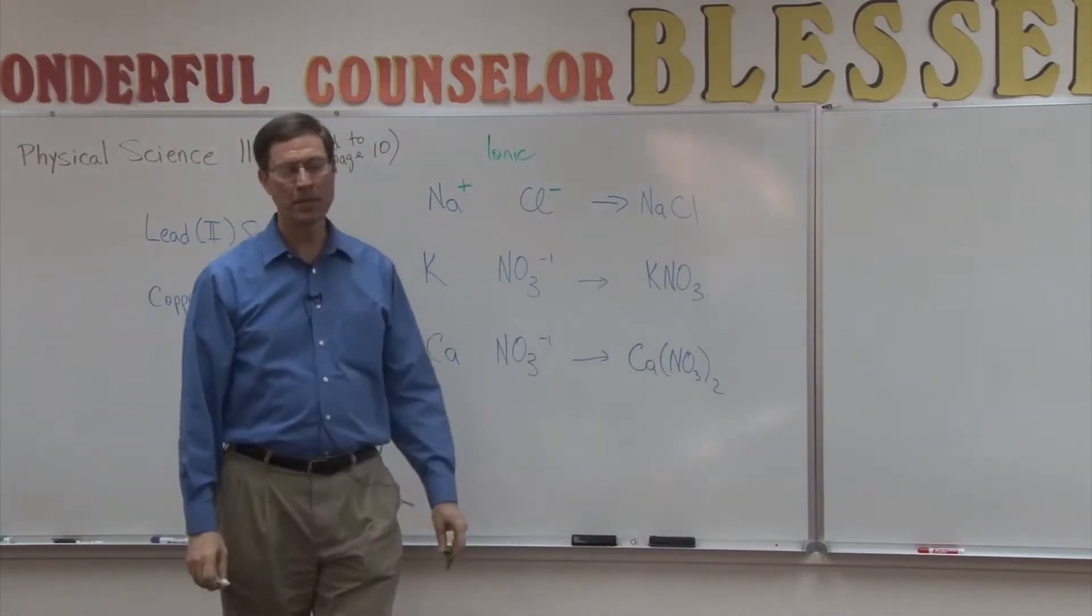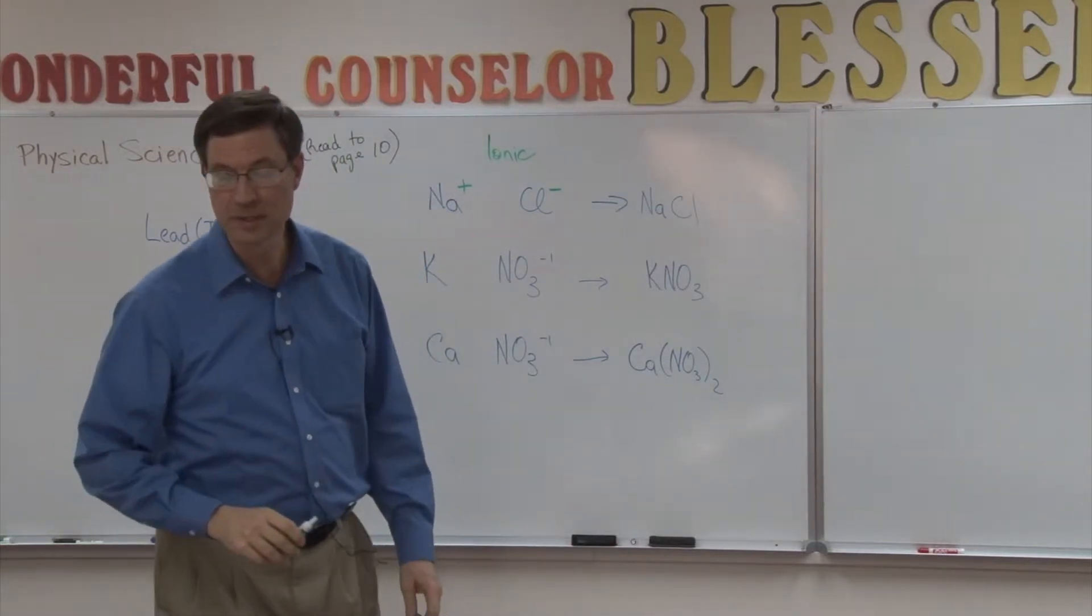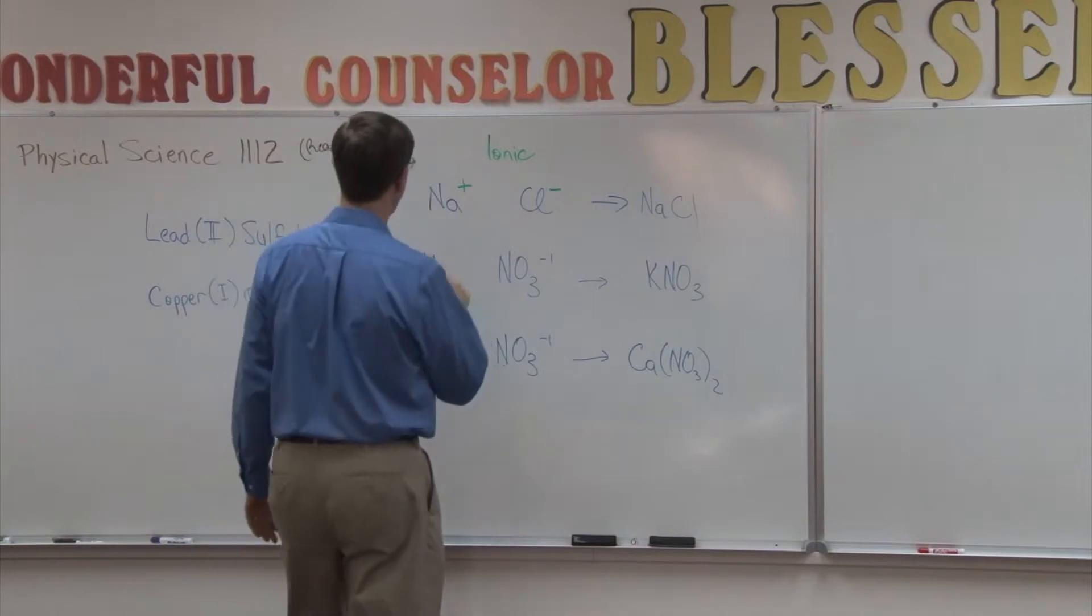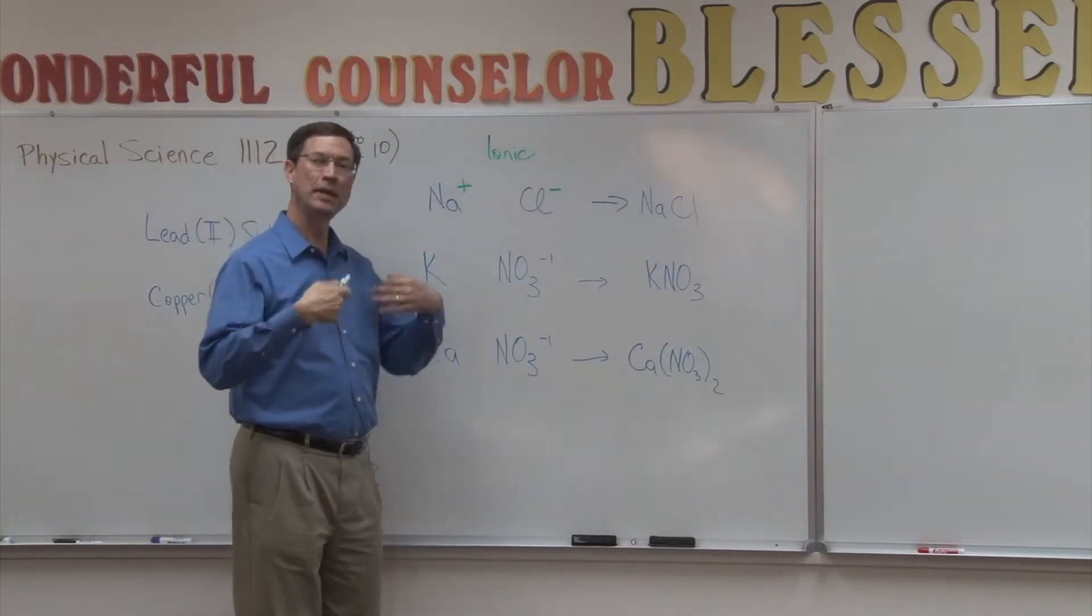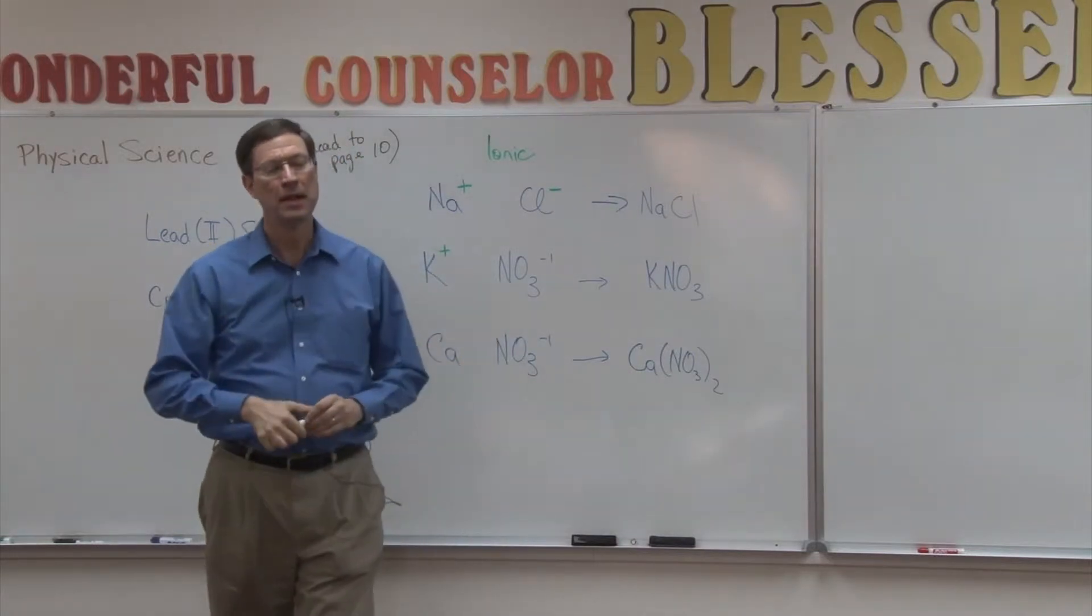Let's take potassium. Potassium is in family one. Its element number is 19. But it has one electron and it tends to want to give that one electron up. As soon as it does, it becomes positively charged.